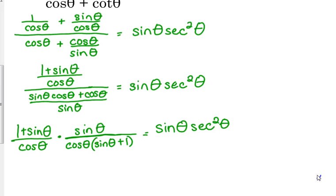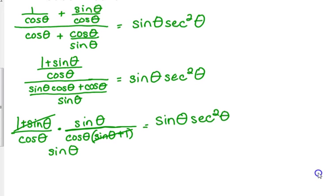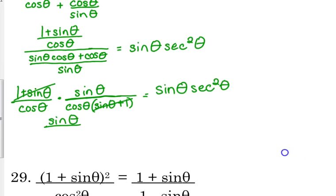We have sine of theta plus one and one plus sine of theta. Those are the same things. Those cancel. And so on the top, we have the sine of theta. On the bottom, we have cosine times cosine, which is cosine squared.